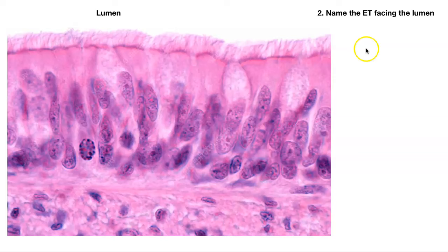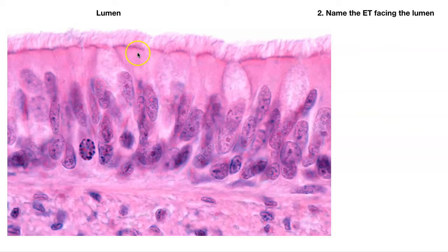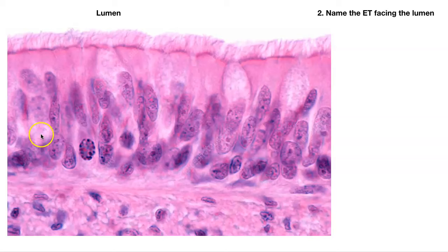Number two. We know it's got cilia. It looks columnar because the nuclei are elongated, and it looks more than one layer thick — but you know that's not what it is. It is pseudostratified — we do not have stratified ciliated columnar epithelium. This is pseudostratified, meaning falsely stratified, ciliated columnar epithelium. The basement membrane is somewhere down here; cilia and goblet cells are part of pseudostratified columnar epithelium.